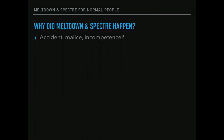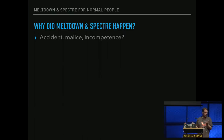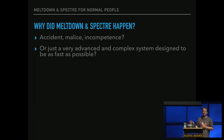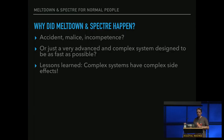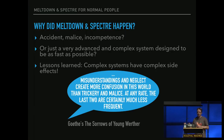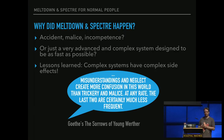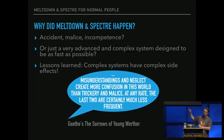Why did Meltdown and Spectre happen? Accident, malice, incompetence — did the NSA tell Intel to do that? Or is it just a very, very complex system with equally complex side conditions? I would say it's complex side effects. Just to quote: if it can be explained by malice and by neglect, it's probably not malice. People do things not because they're evil most of the time — they do it because it seems right. And what Intel and the other processor companies did was build a very, very complex system to get very, very fast processors.